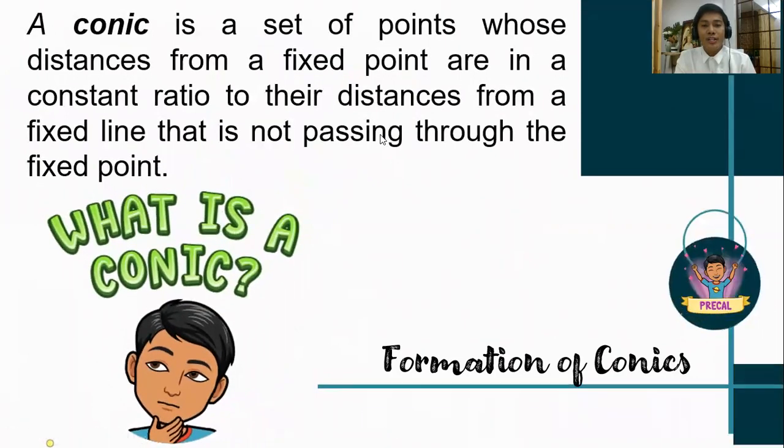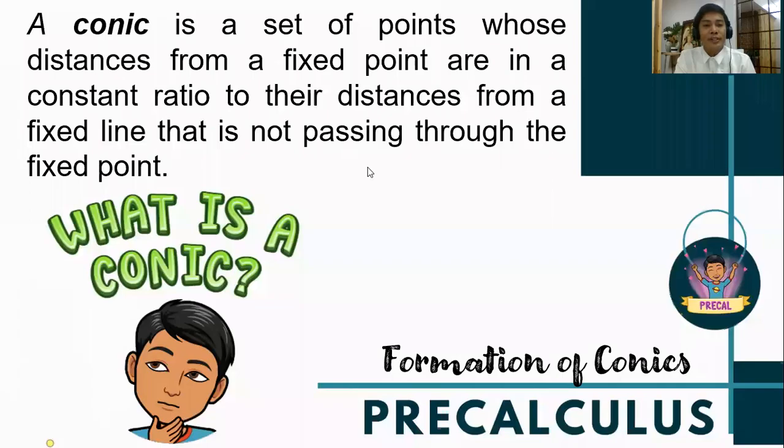A conic, which is two dimensional in figure, is a set of points whose distances from a fixed point are in constant ratio to their distances from the line that is not passing through the fixed point.